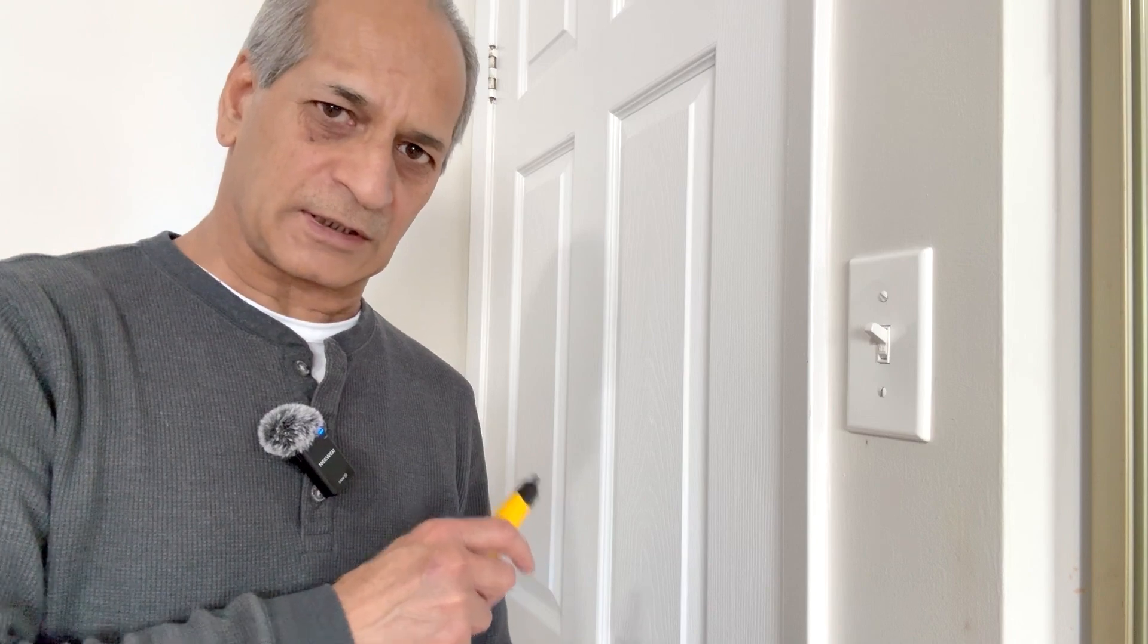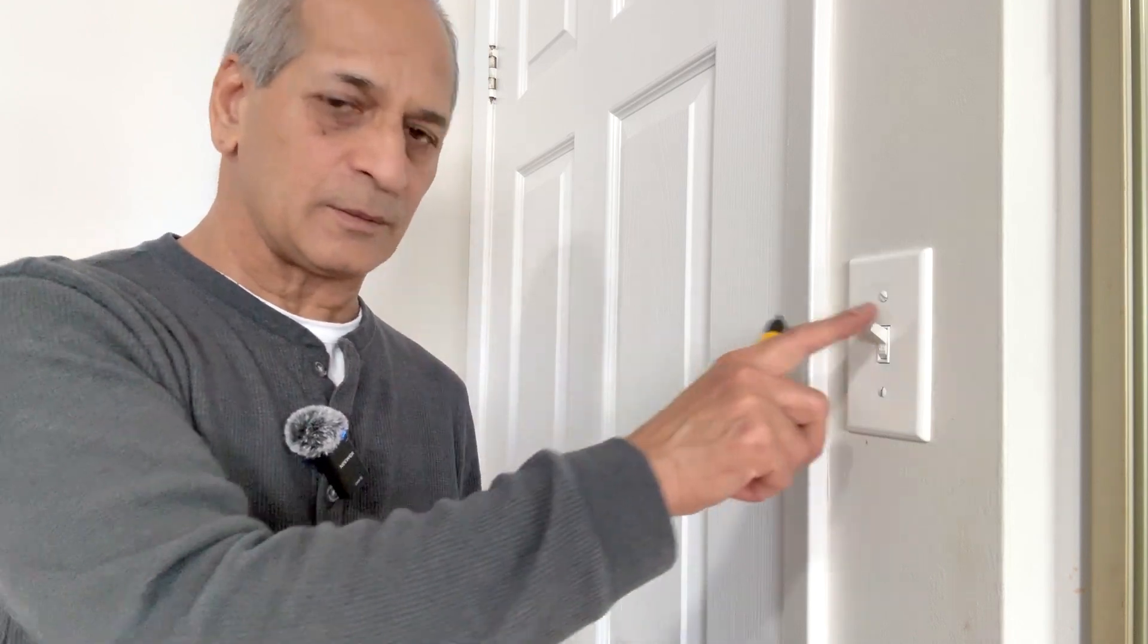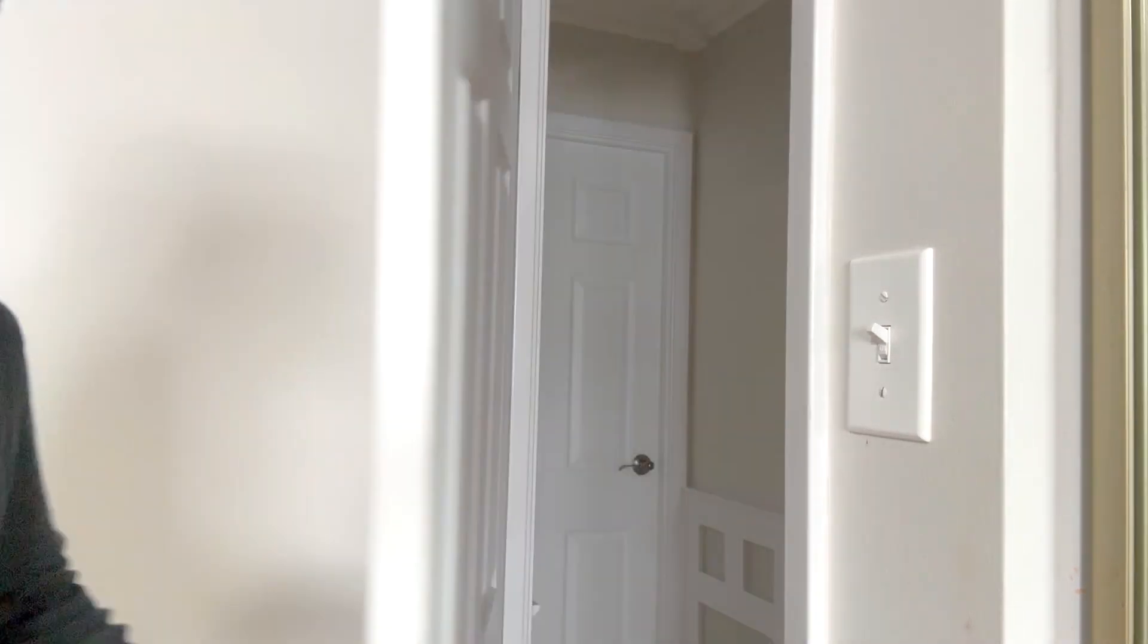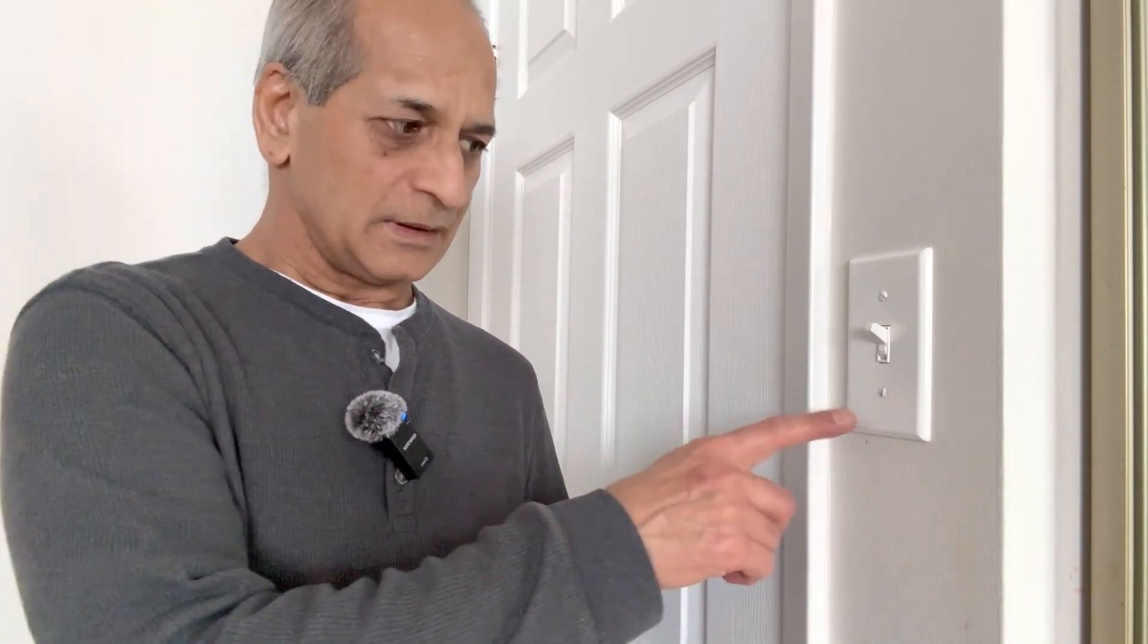First things first I will go down and turn off the circuit breaker. The light is on right now. When I switch off the circuit breaker this should go off. The light is off that means the circuit breaker is off. But after I open this I will again make sure that there is no power in the wires.